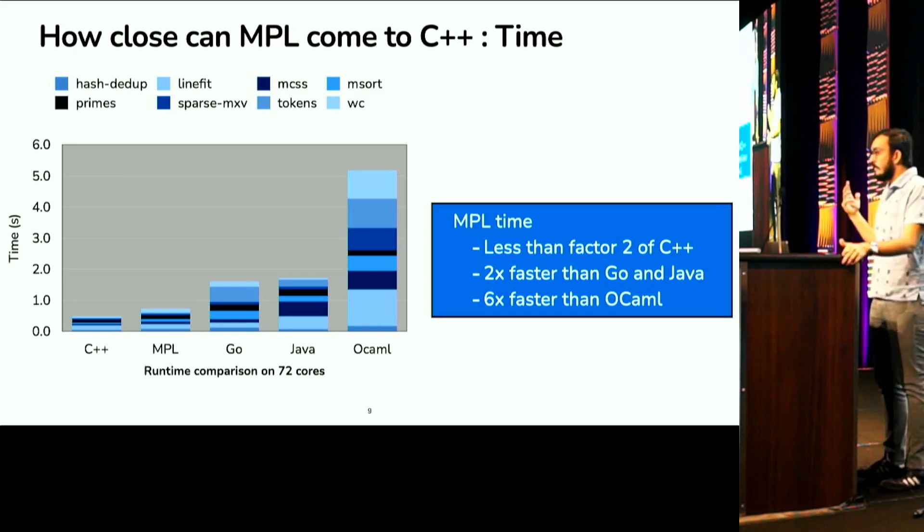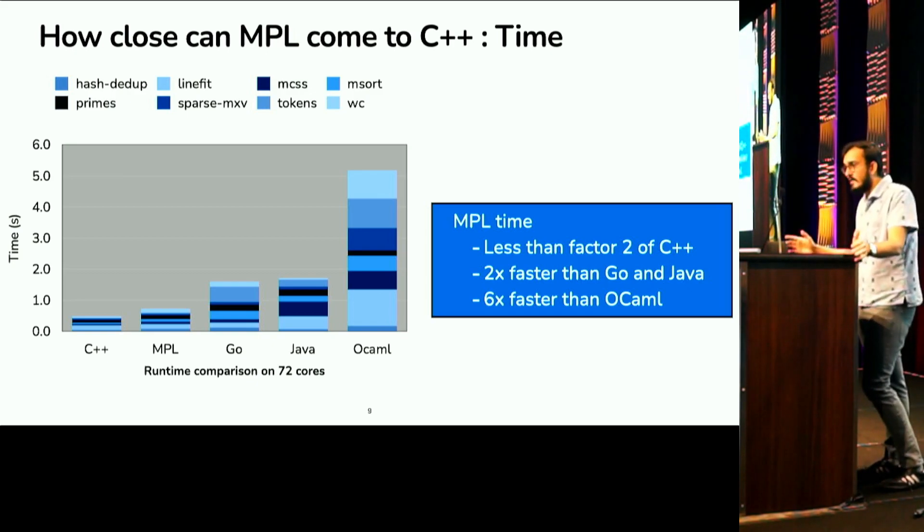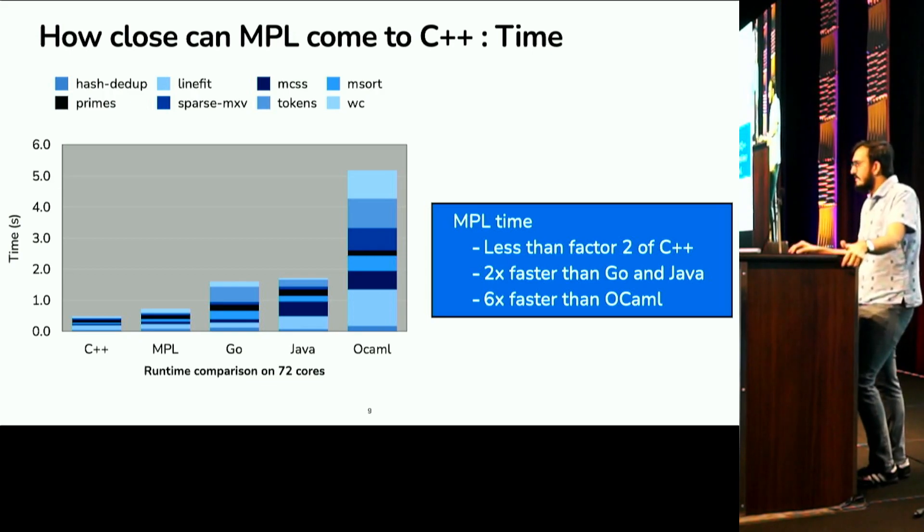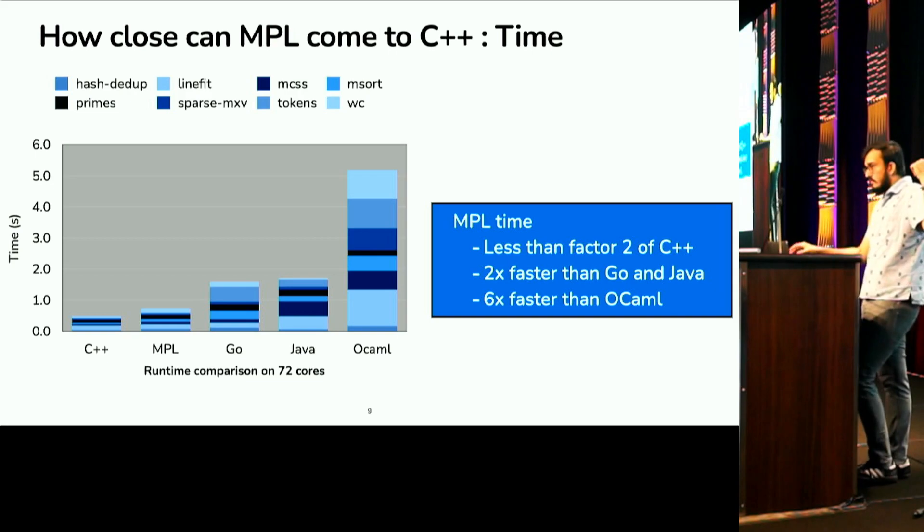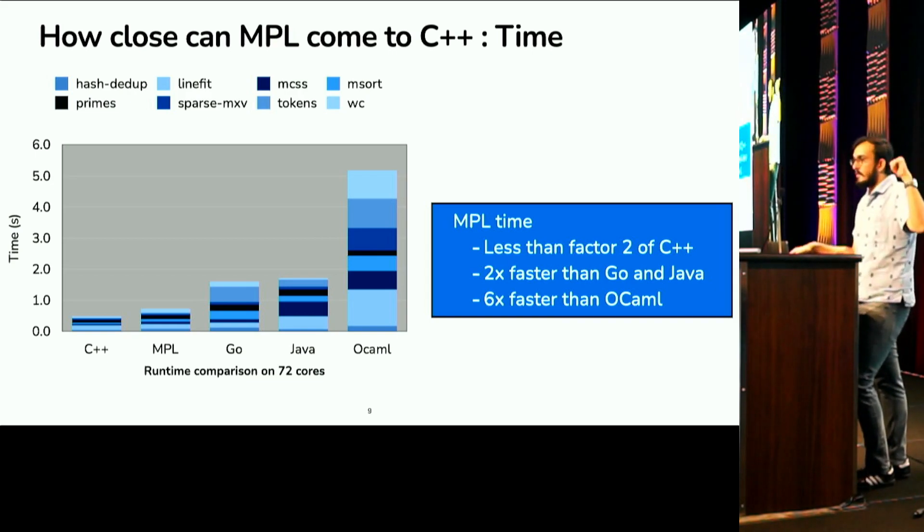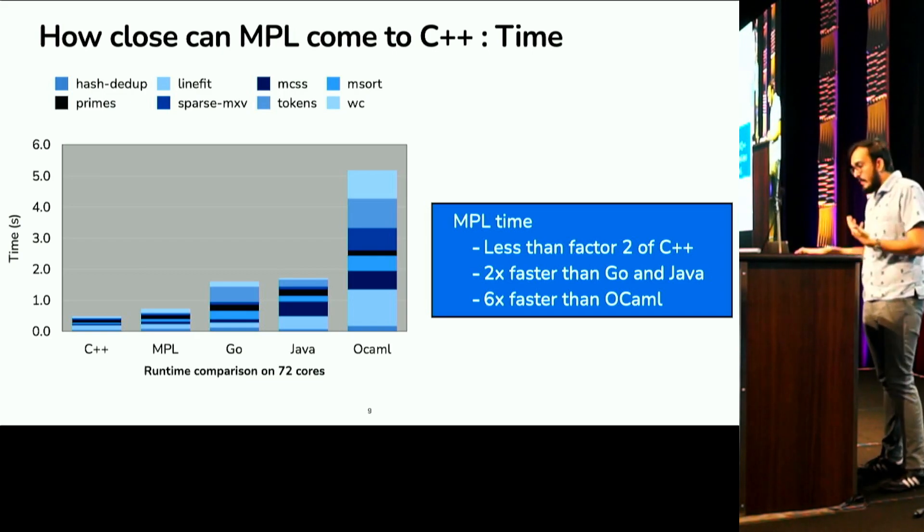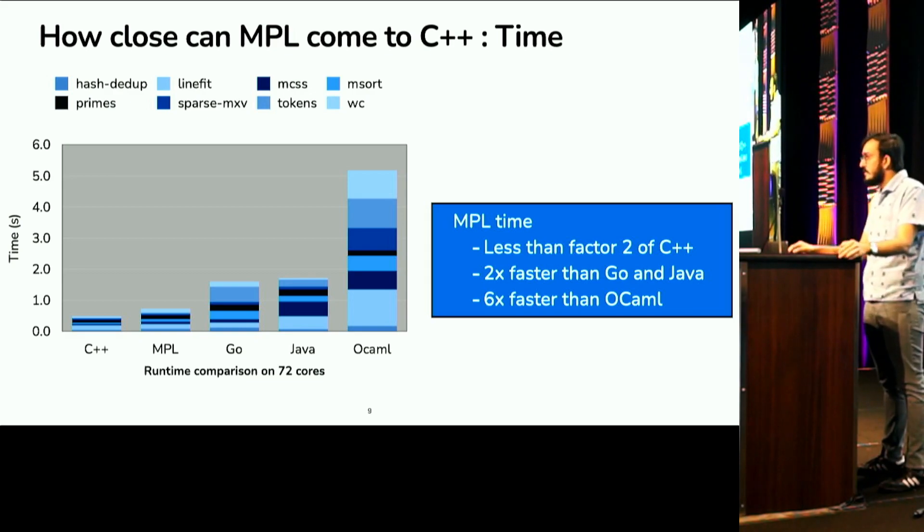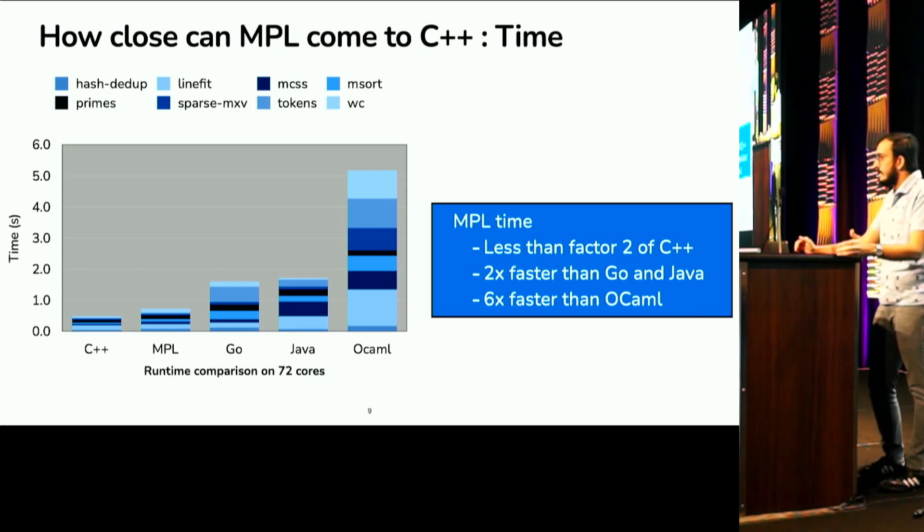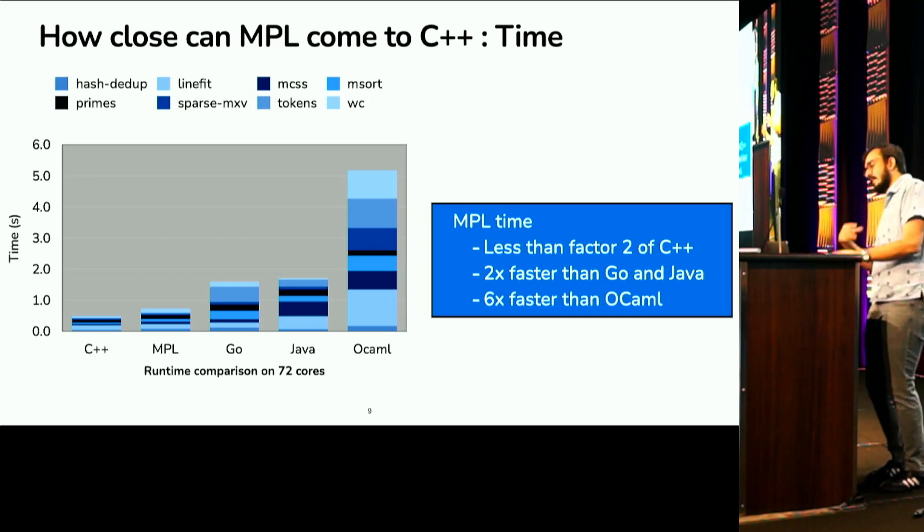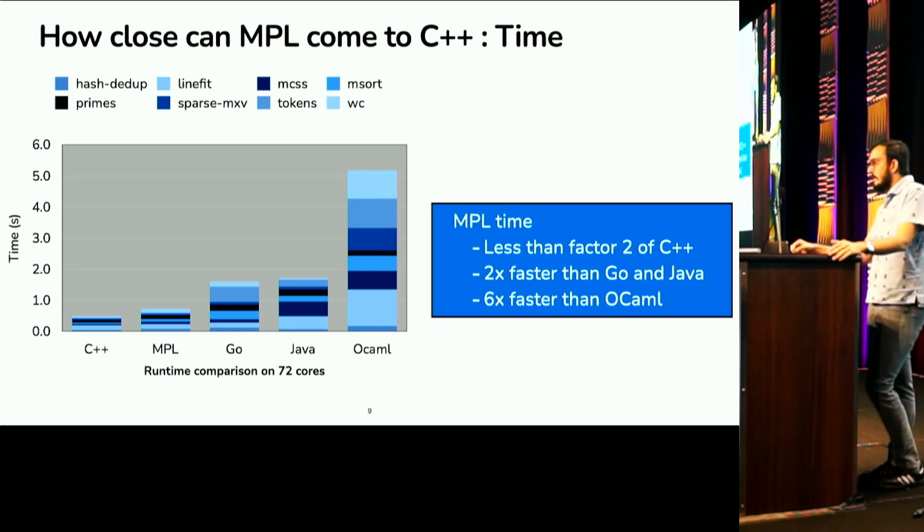A few observations. So, actually Maple comes really close to C++. Its running time is within factor two of C++, which is great because these codes are implemented by the parley-lib project, are ported from the parley-lib project. And they're some of the fastest parallel codes out there. And then Maple runtime is two times faster than Go and Java, which are state-of-the-art procedural languages, which are also automatically memory managed. And 6x faster than OCaml, which is a parallel functional language.